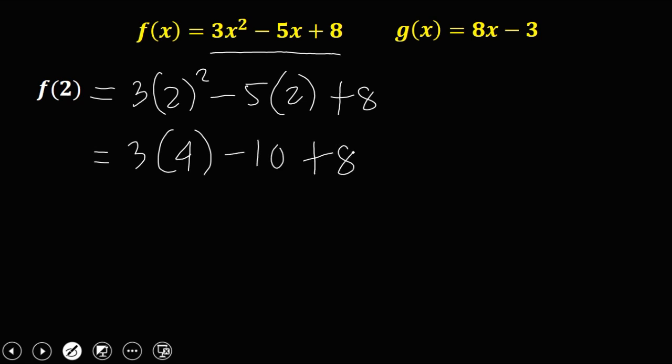Then plus 8. Then 3 times 4, that's 12, then negative 10 and positive 8, that's negative 2. So therefore f(2) is equal to 10. So this is the value of f(2).